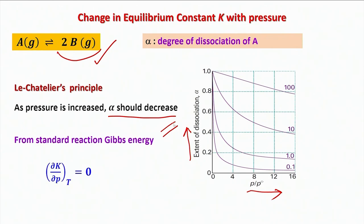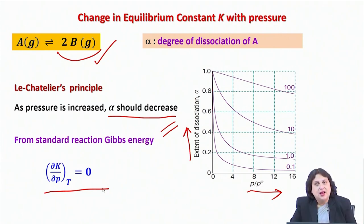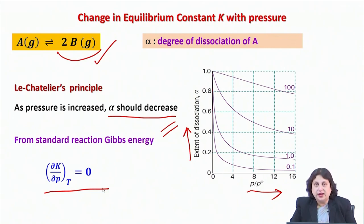But from standard reaction Gibbs energy, we have (del K / del P)|T = 0. Are these two results in conflict? The answer is no. As pressure is increased, alpha changes in such a way that K remains constant. Therefore, the decrease in alpha and the constancy of the equilibrium constant with pressure are not at all in conflict with each other.